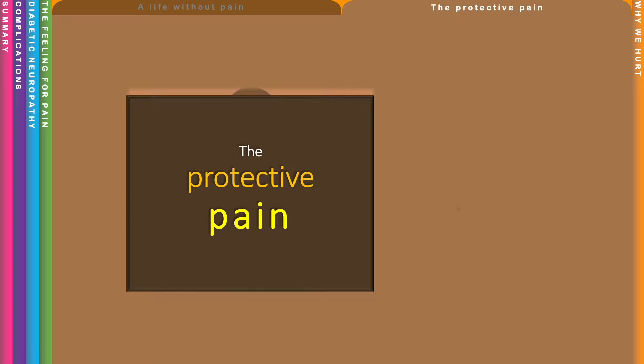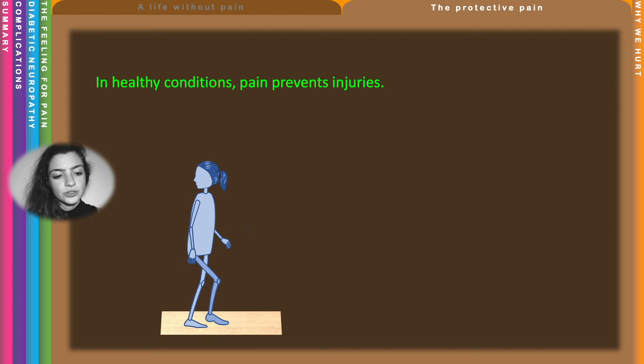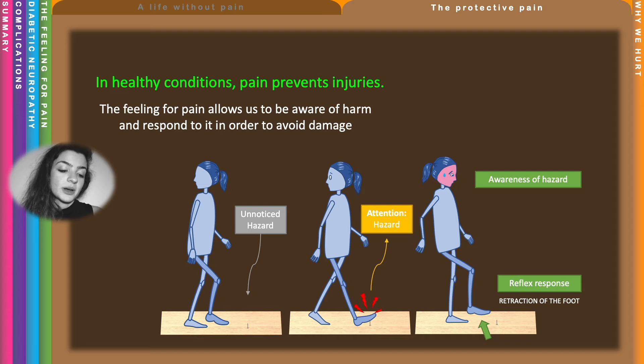In healthy conditions, pain prevents injury. For example, in the situation where you're about to step on a nail, as you step into it you feel the pain so you retract your foot. Pain is a very important step in acknowledging the danger and triggering reflex responses.